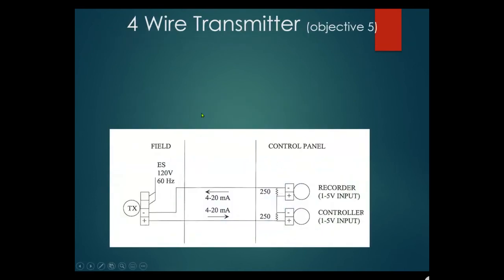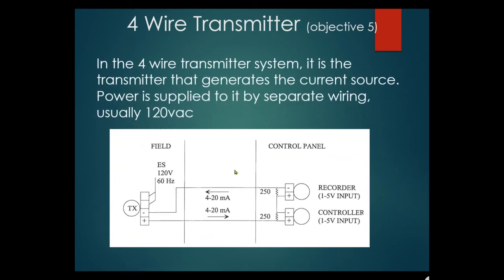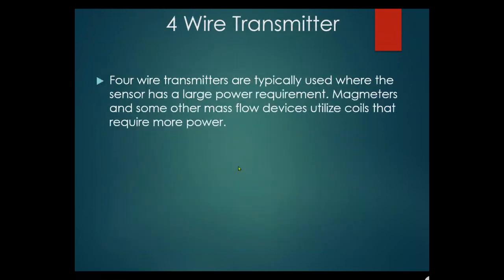Objective five — four-wire transmitter: in this case the loop has a separate voltage supply (such as 120V 60Hz or 24V DC) for the transmitter power, separate from the 4 to 20 milliamp signal wires. Four-wire parameters are typically used when the sensor has a large power requirement — mag meters and some mass flow devices that utilize coils requiring more power.